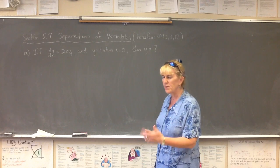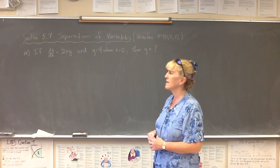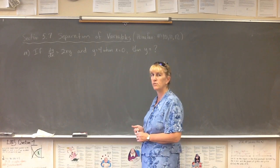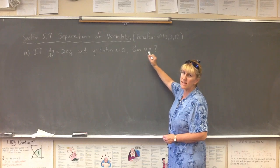Okay, so we're going to teach by example with this one right here. We're going to start off with if dy/dx is equal to 2xy and y equals 4 when x equals 0, then y equals what? This is the question. I need y equals.